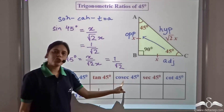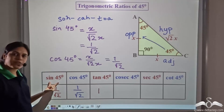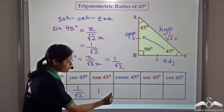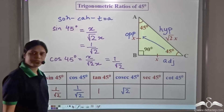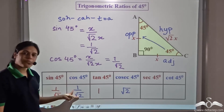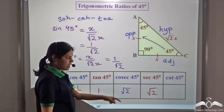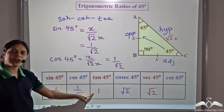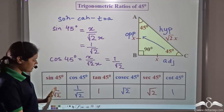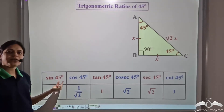Cosec 45 degrees is the reciprocal of sin 45 degrees — the reciprocal of 1 over root 2 is simply root 2. Sec 45 degrees is the reciprocal of cos 45 degrees — the reciprocal of 1 over root 2 is also root 2. Cot 45 degrees is the reciprocal of tan 45 degrees, and the reciprocal of 1 is 1. These are the values of the trigonometric ratios corresponding to 45 degrees.